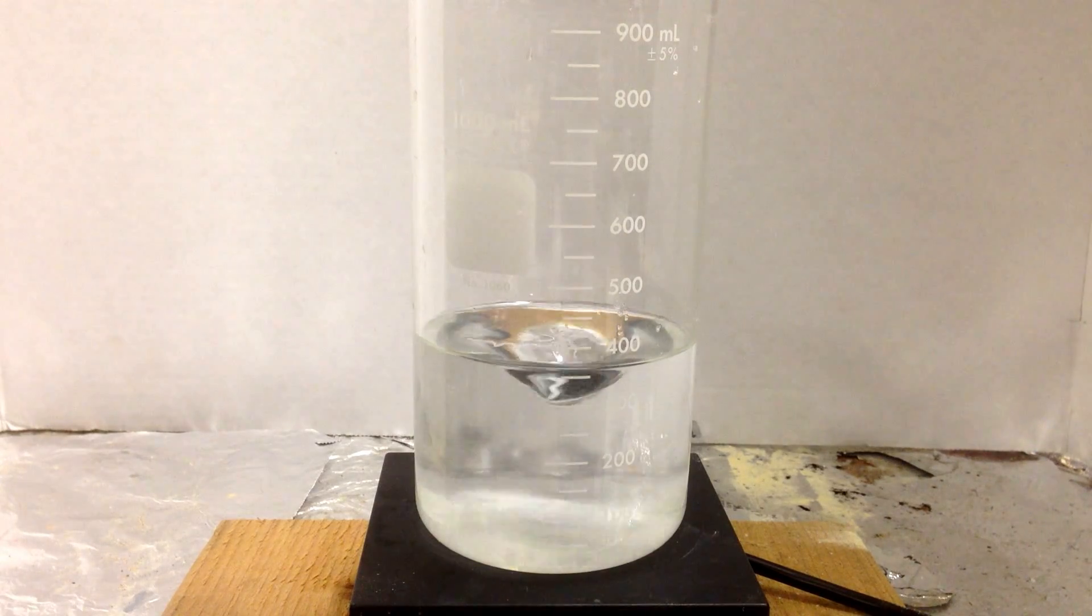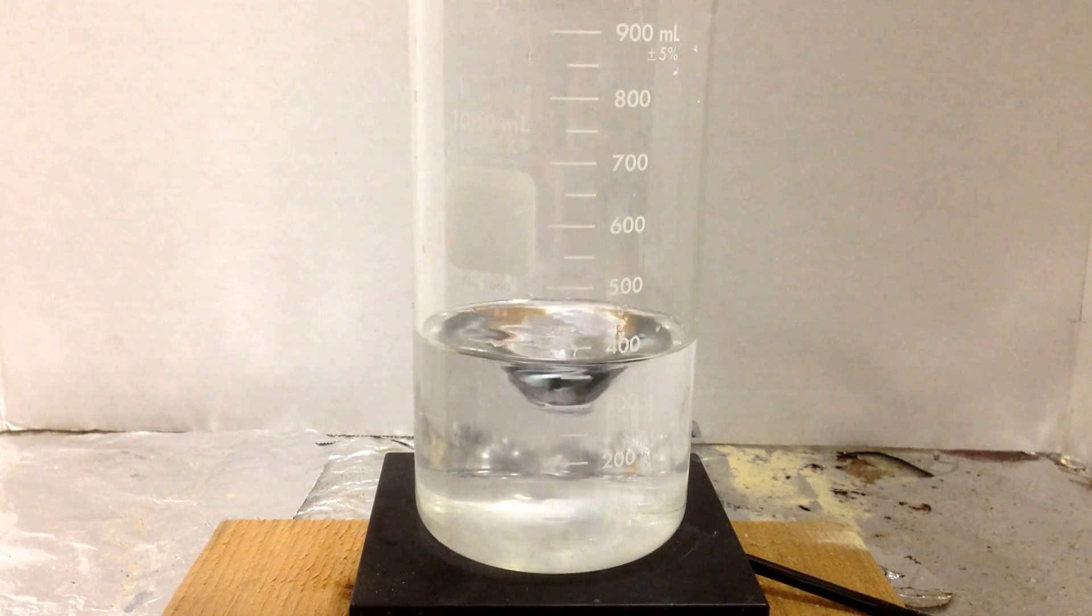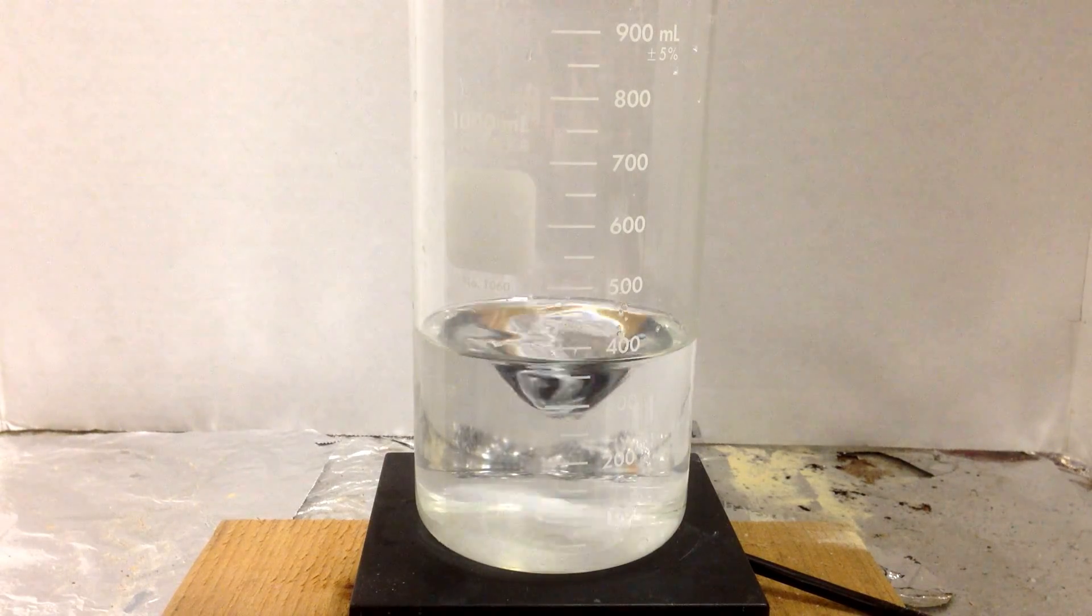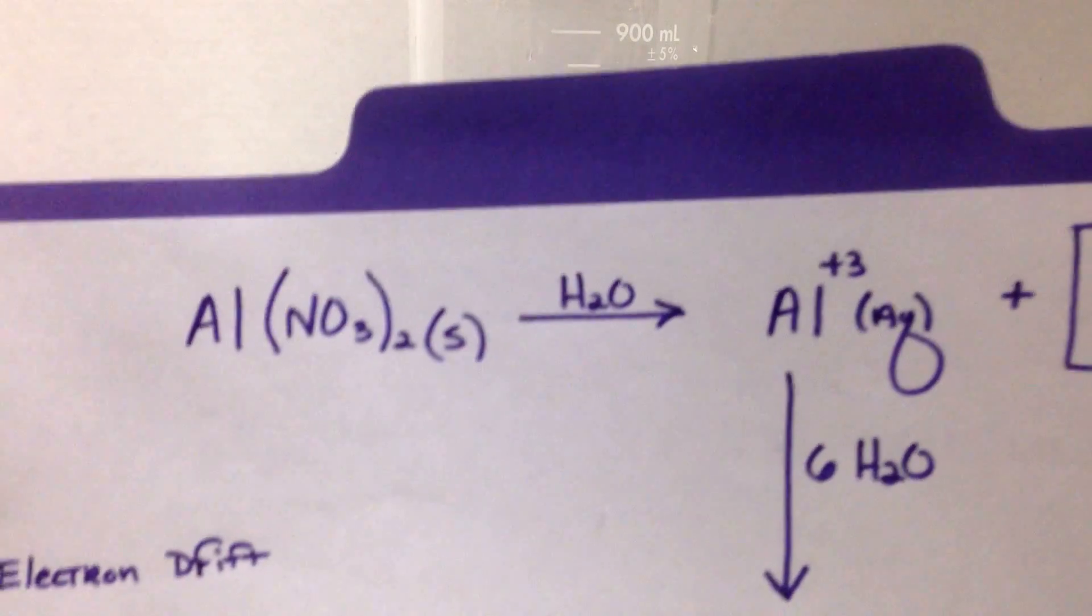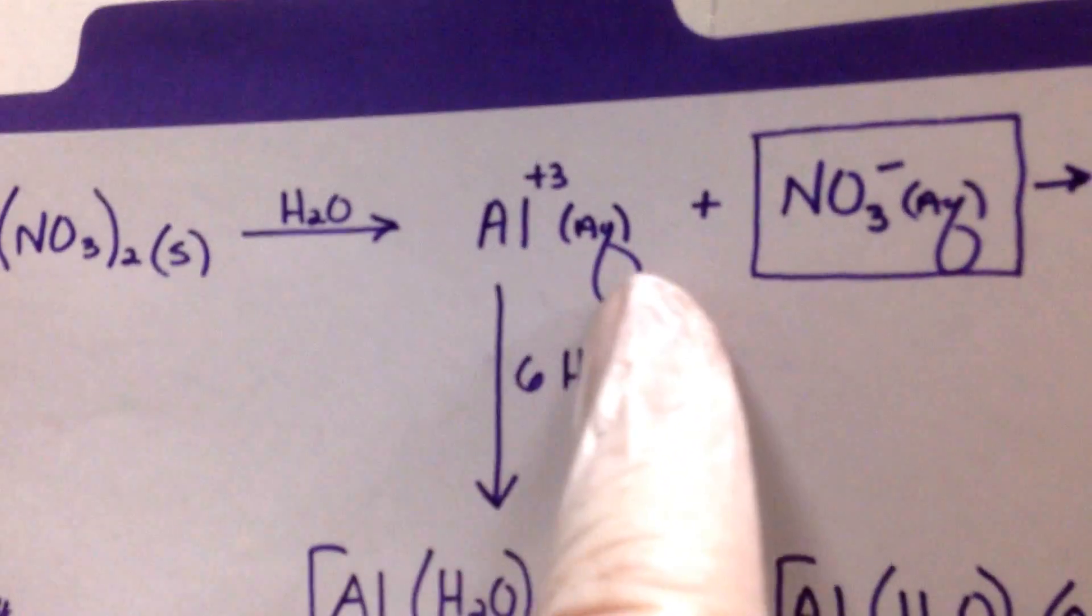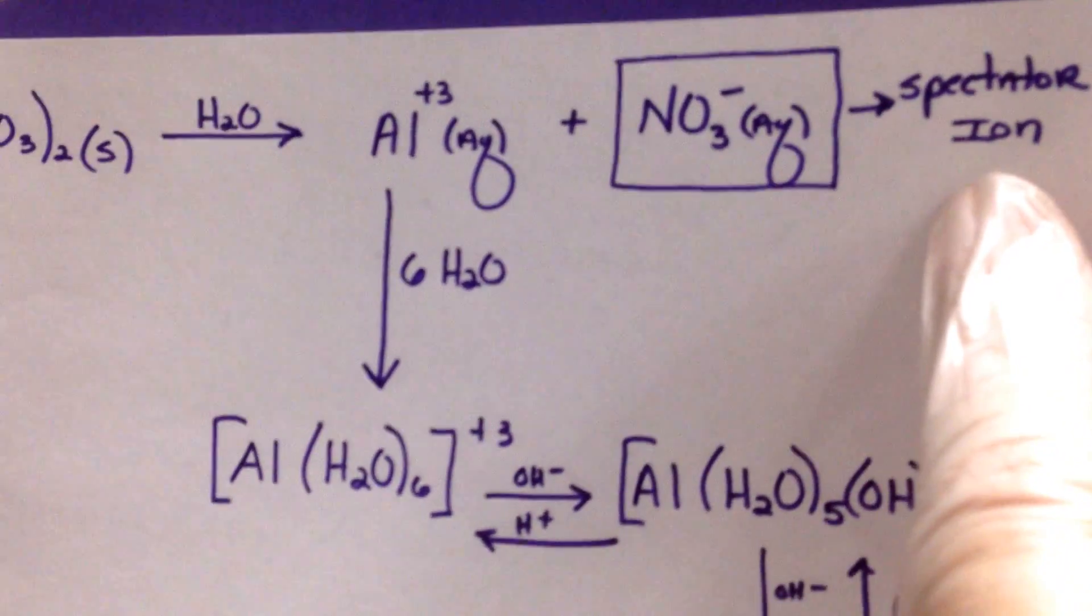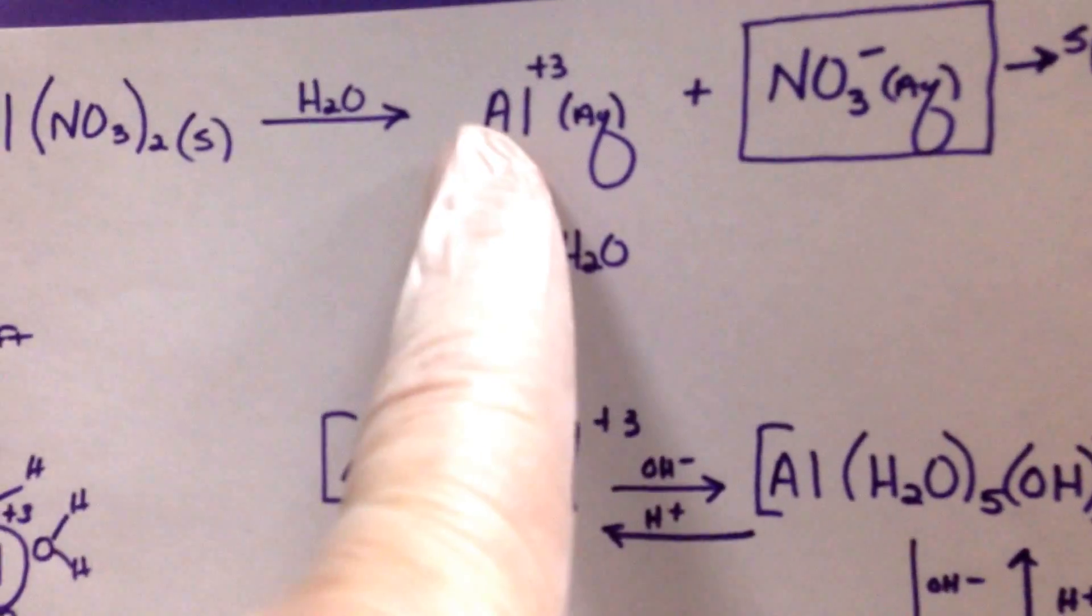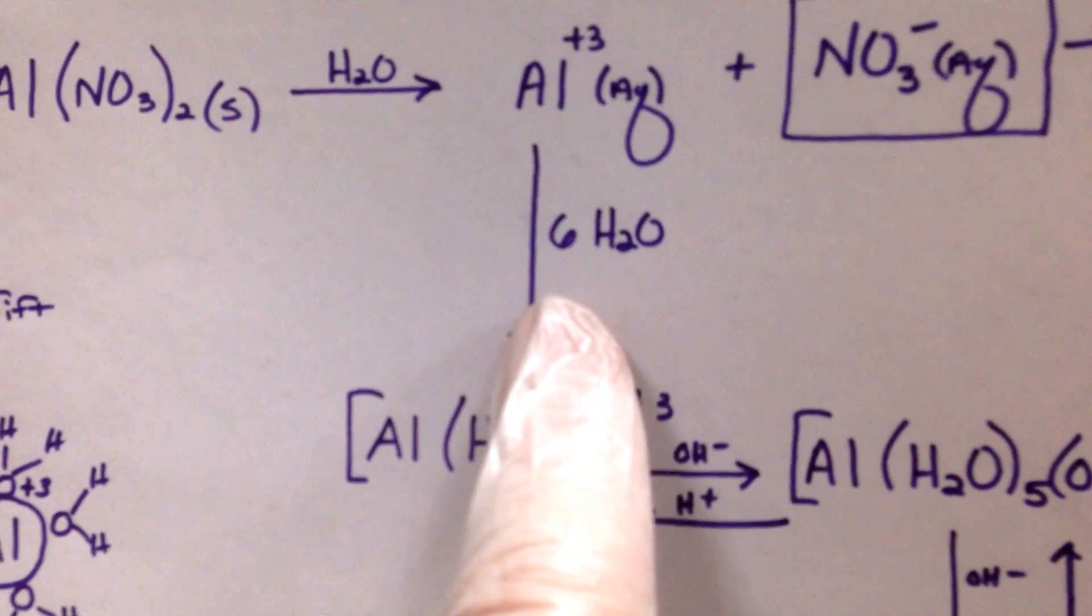It's still dissolving, and the magnetic stirring rod is stirring away. What's happening here is I have aluminum nitrate, and in water it breaks apart into aluminum plus three and the nitrate ion, which is a spectator ion here. What happens is because this ion, like most amphoteric ions, is so small, it draws in six waters.